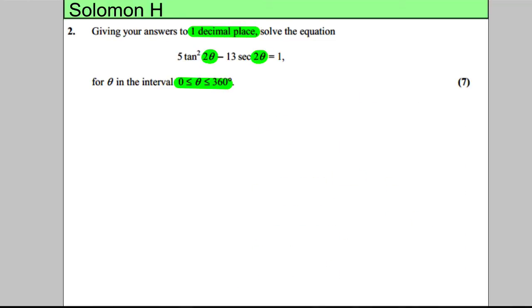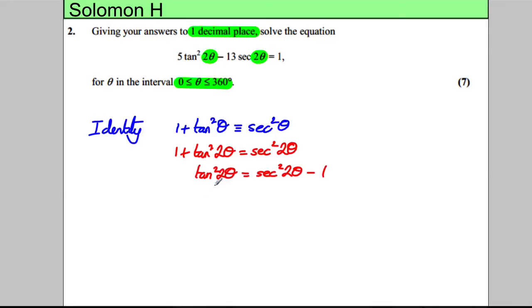So, what I'm going to use to state the identity. I know the identity I'm going to use is 1 plus tan squared single theta is the same thing as sec squared single theta. So, in our case, we're dealing with two thetas. 1 plus tan squared 2 theta would be sec squared 2 theta. I'm making tan squared theta the subject of the formula. Tan squared theta, I can therefore replace it with sec squared 2 theta, take away 1, subtracting 1 off both sides.